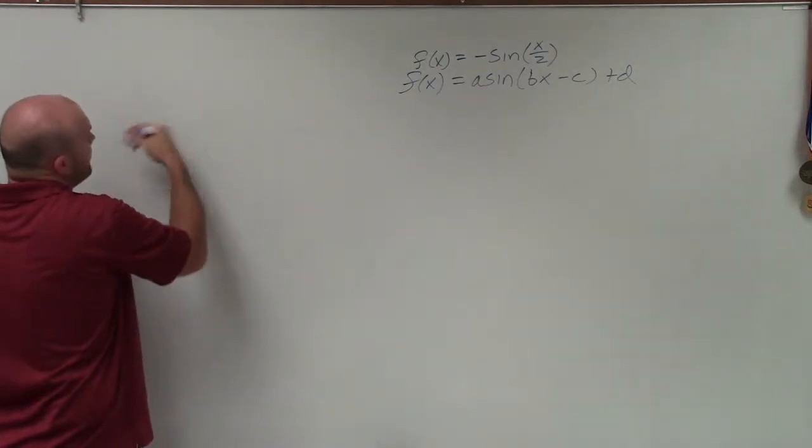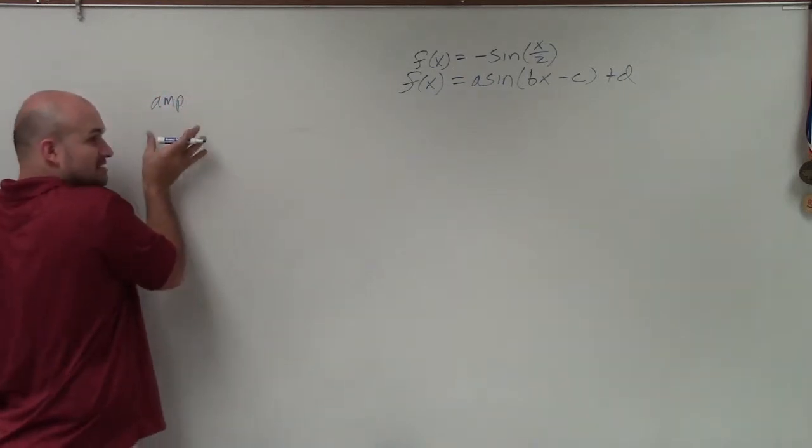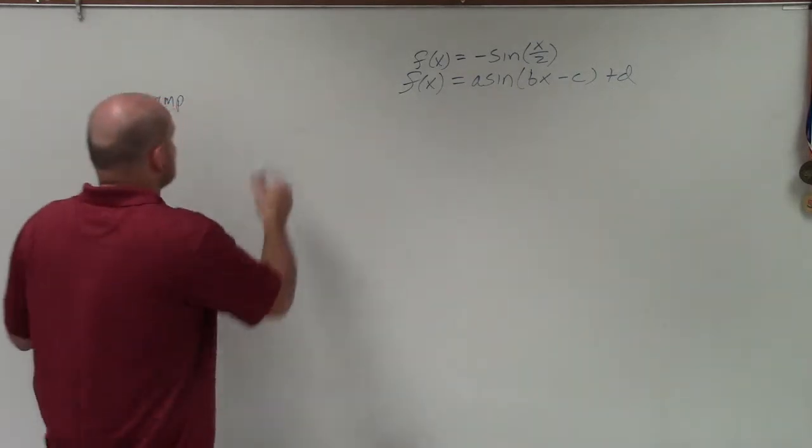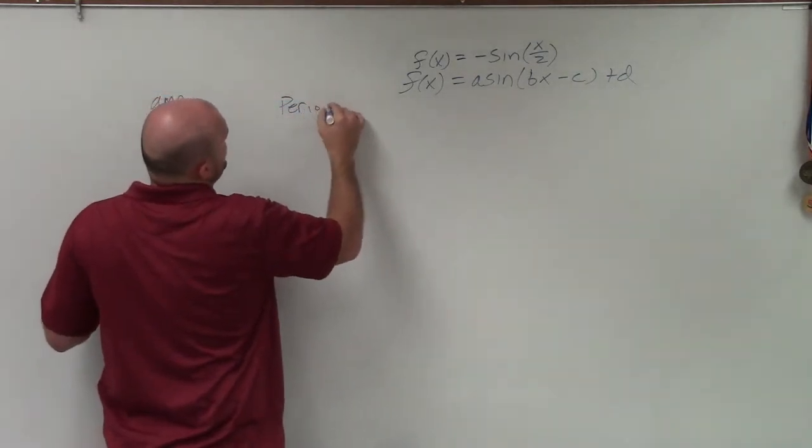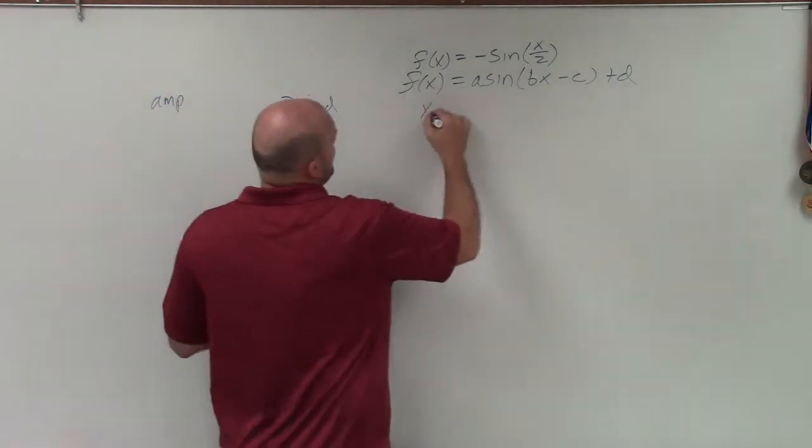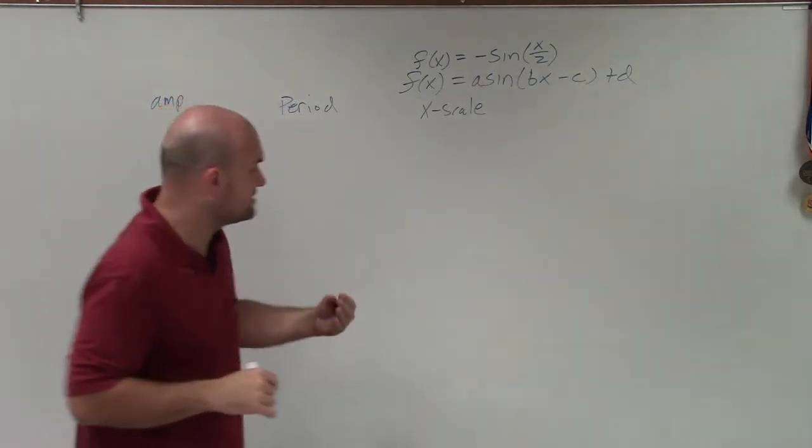So when graphing, there's a couple of things that we want to make sure that we understand: the amplitude, which is the half distance between the max and the min points. We want to make sure we know what the period is, which is the distance that it takes for the graph to repeat itself. The x scale, the distance between each of our important points of our graph.